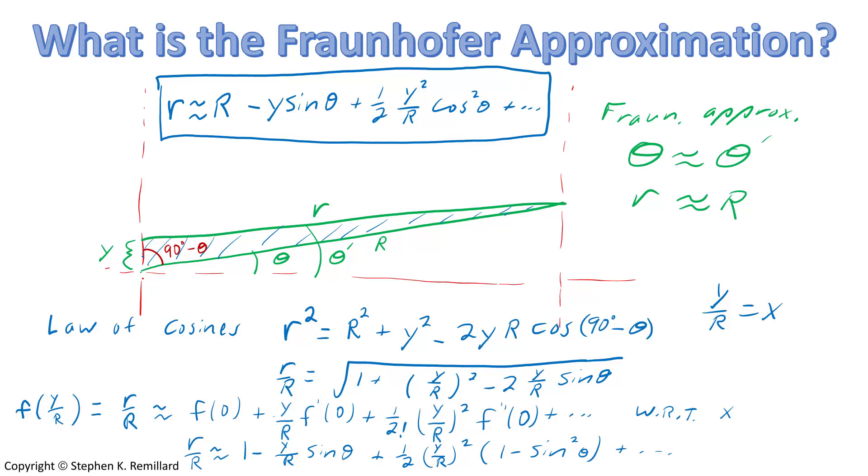Big R is usually what you can most easily know, because it's referenced to a known place, which is depicted as an origin here. The Fraunhofer approximation usually keeps these two terms. If you keep a higher order term, you just get more precision, but this typically handles the precision needed to produce the famous Fraunhofer diffraction pattern.